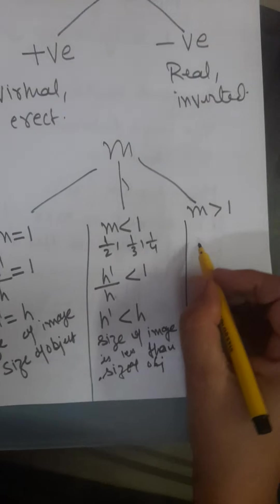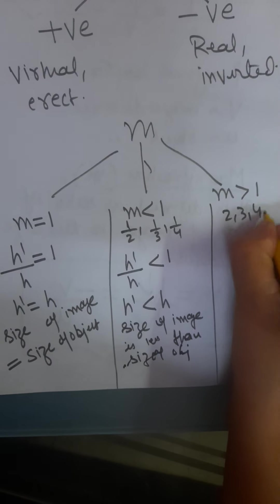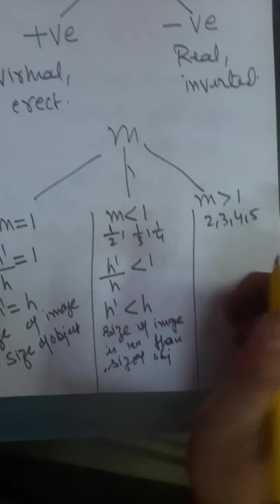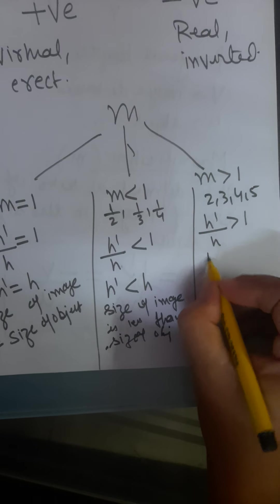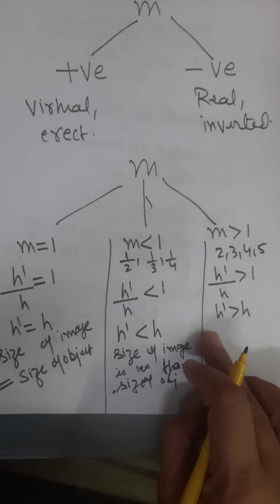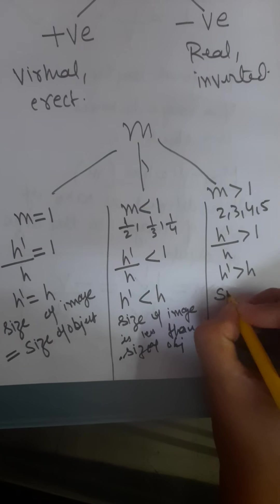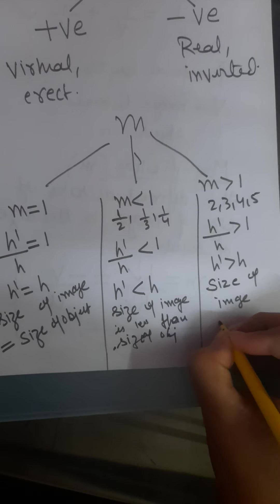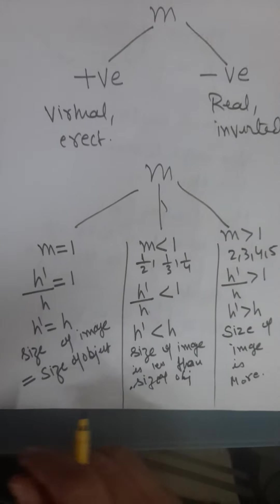Then we come to magnification greater than 1. Values can be 2, 3, 4, 5, 10, and so on. If magnification is greater than 1, meaning H dash by H is greater than 1, then H dash is greater than H — which means the size of image is more than the size of object.